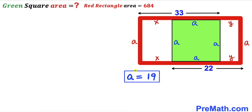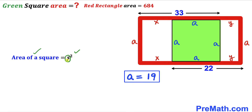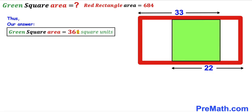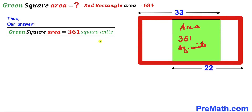The side length of the green square is 19 units. Using the area of a square formula — area = s² — the area is 19² = 361 square units. That is our final answer. Thanks for watching and please don't forget to subscribe to my channel for more exciting videos. Bye!